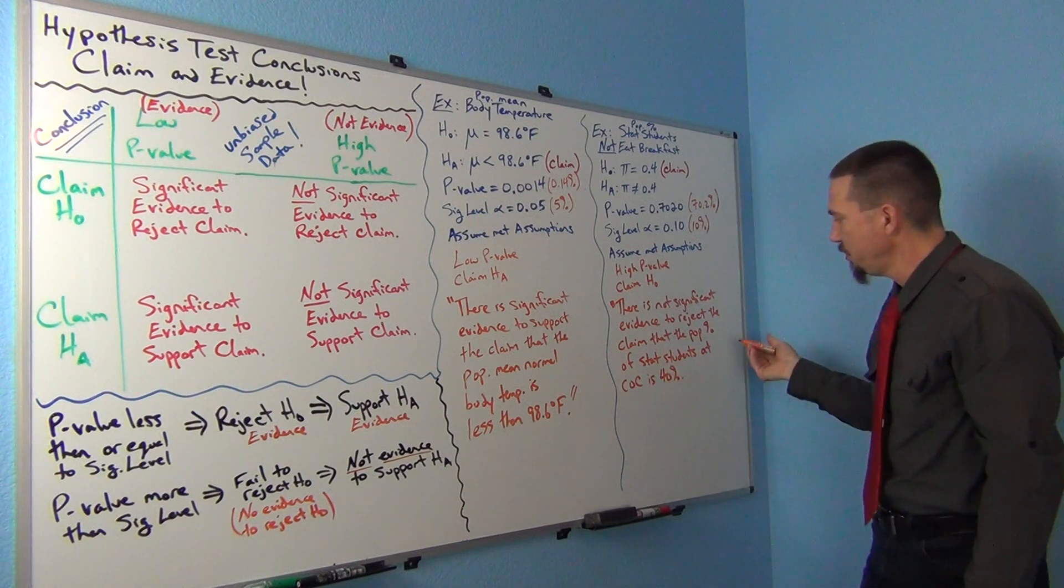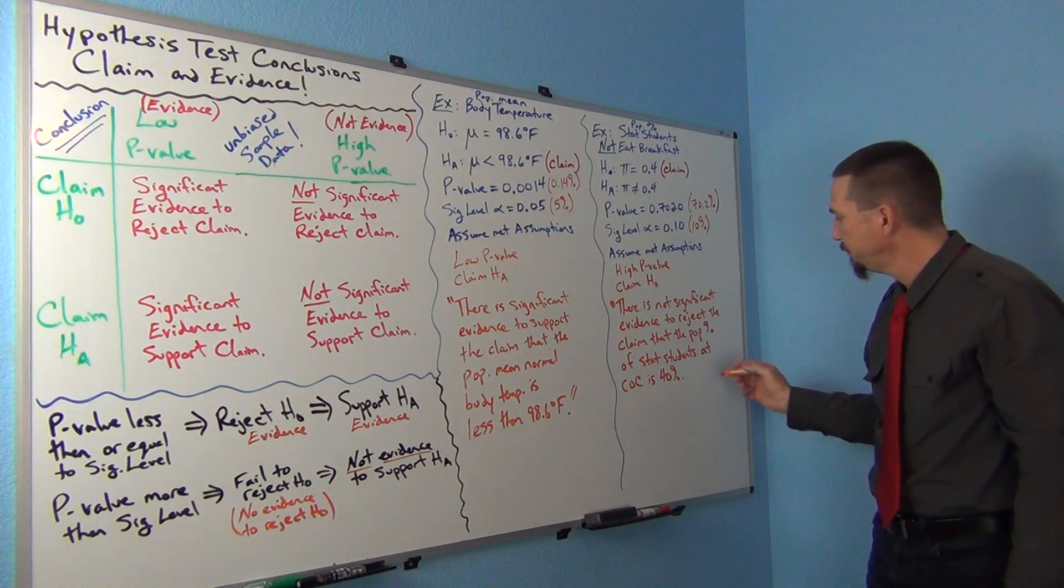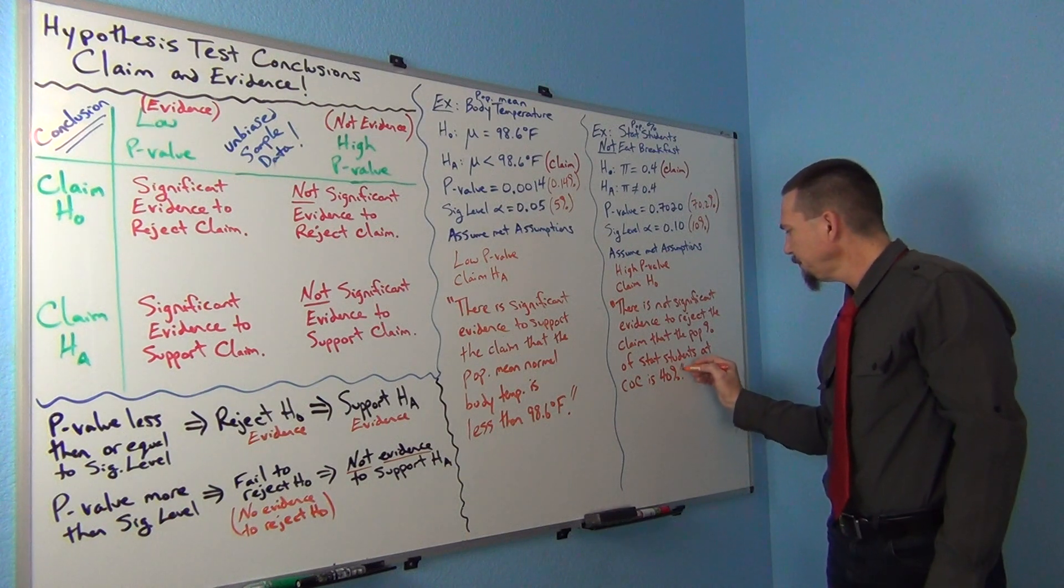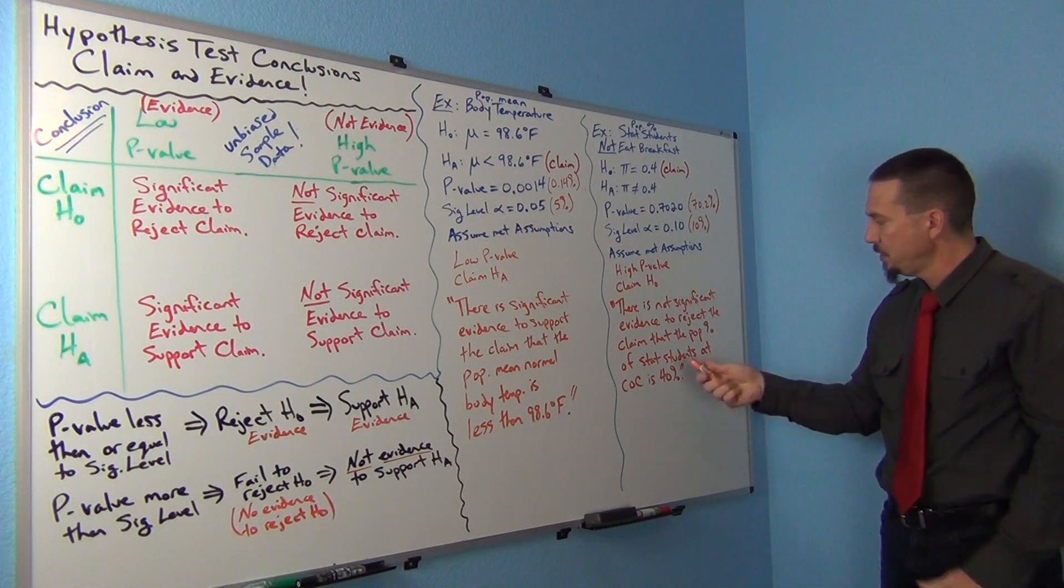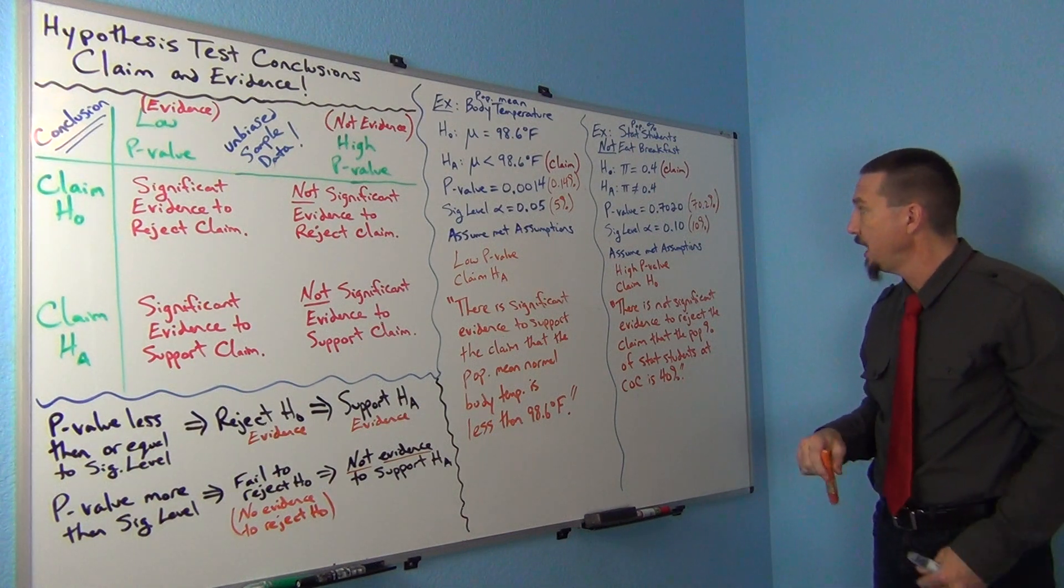is 40%, or if you could say population proportion is 0.4. So there's not significant evidence to reject the claim that the population percentage of stat students at COC is 40%.